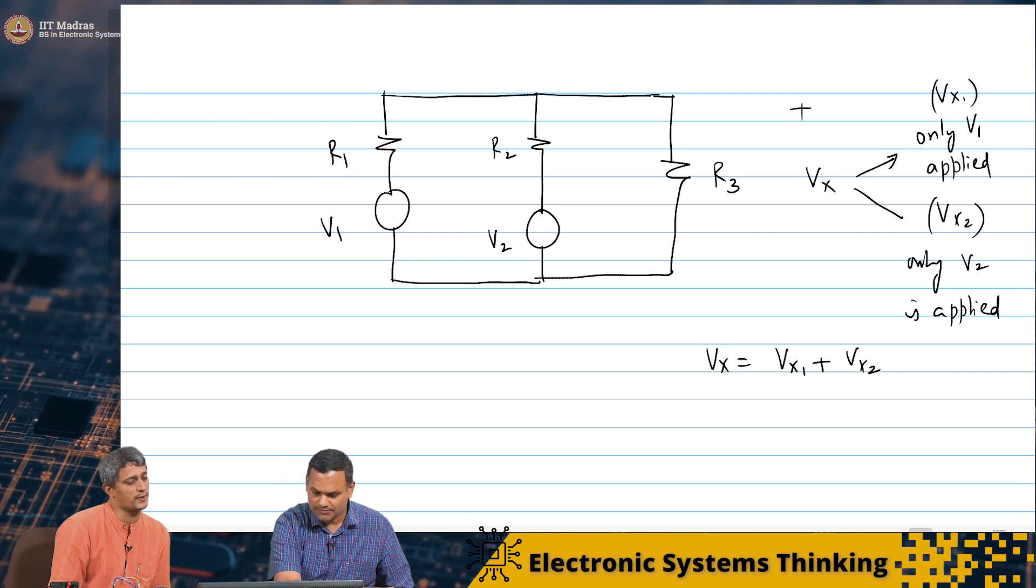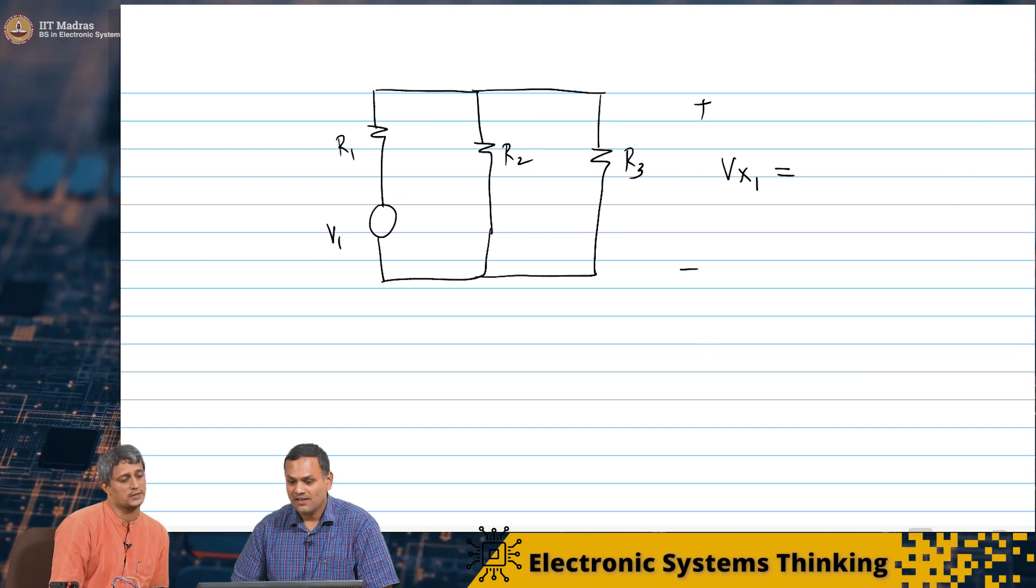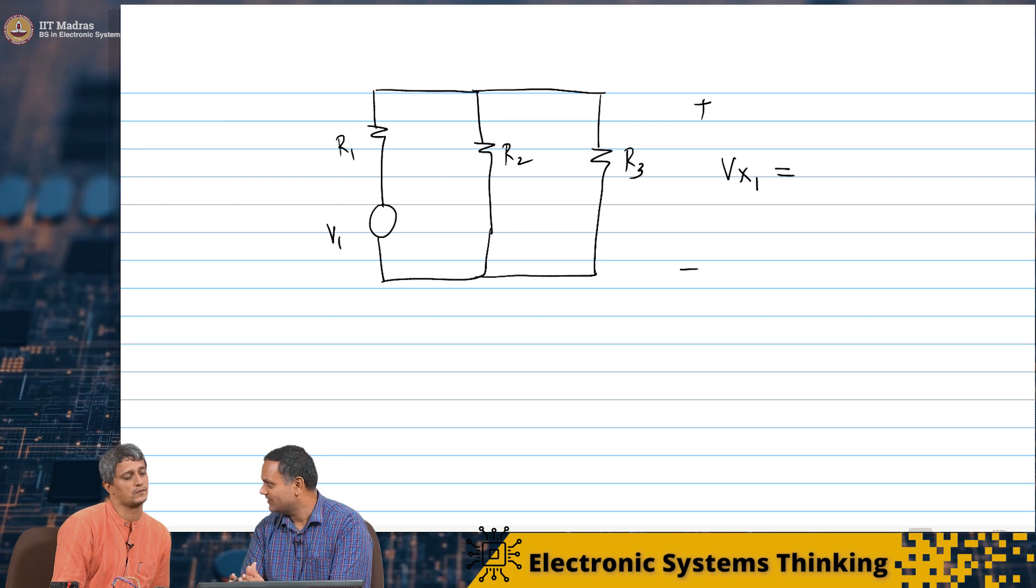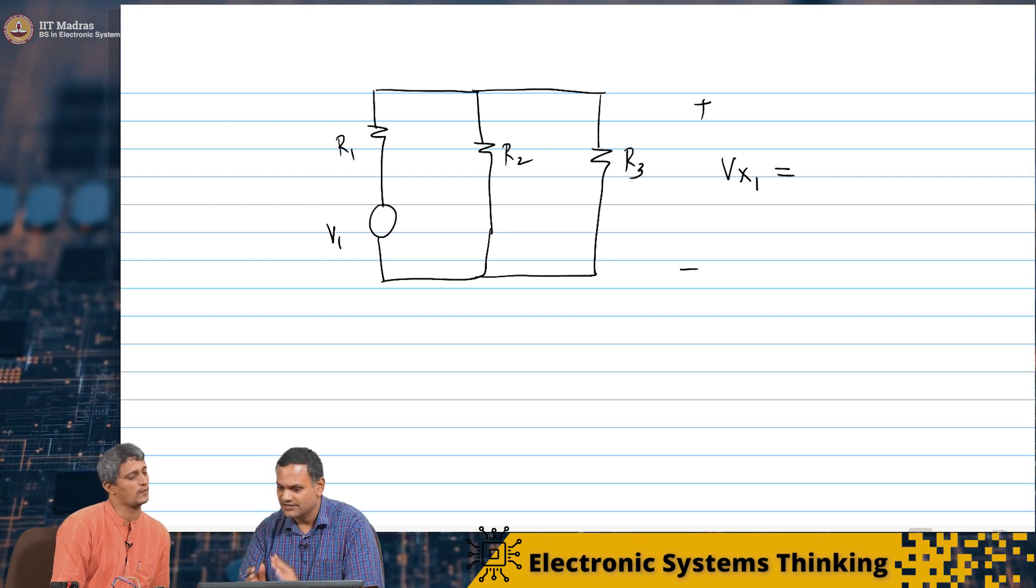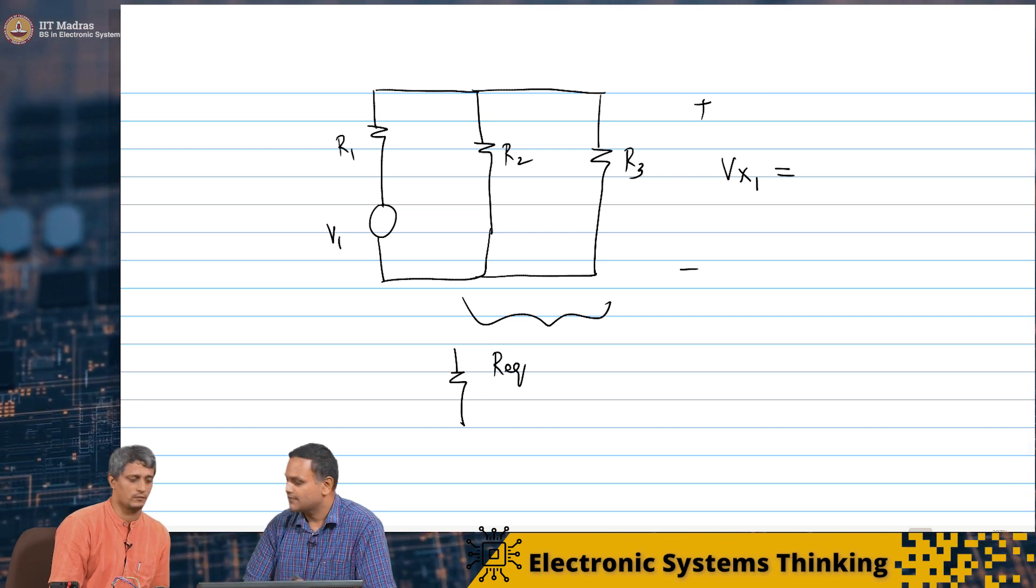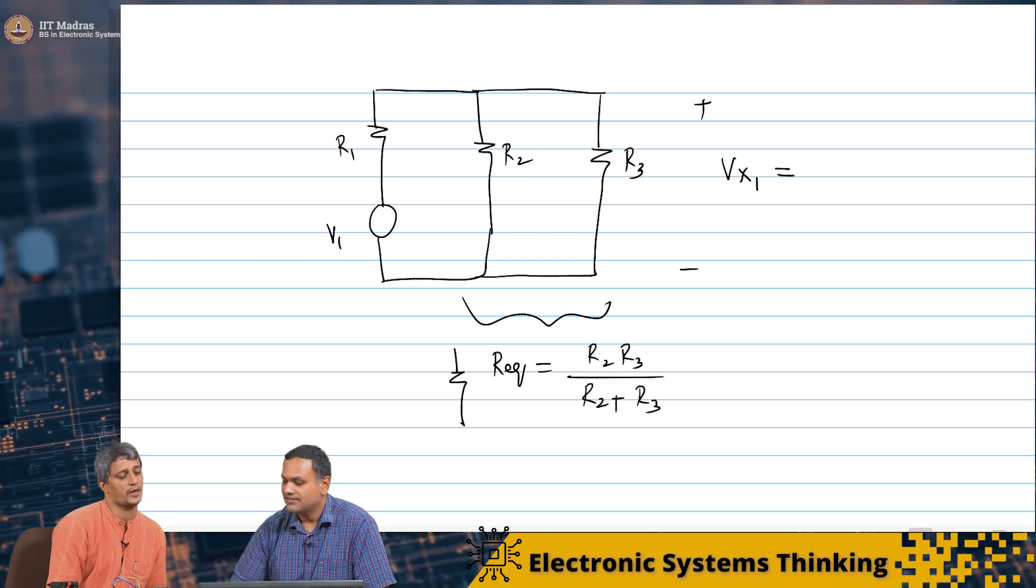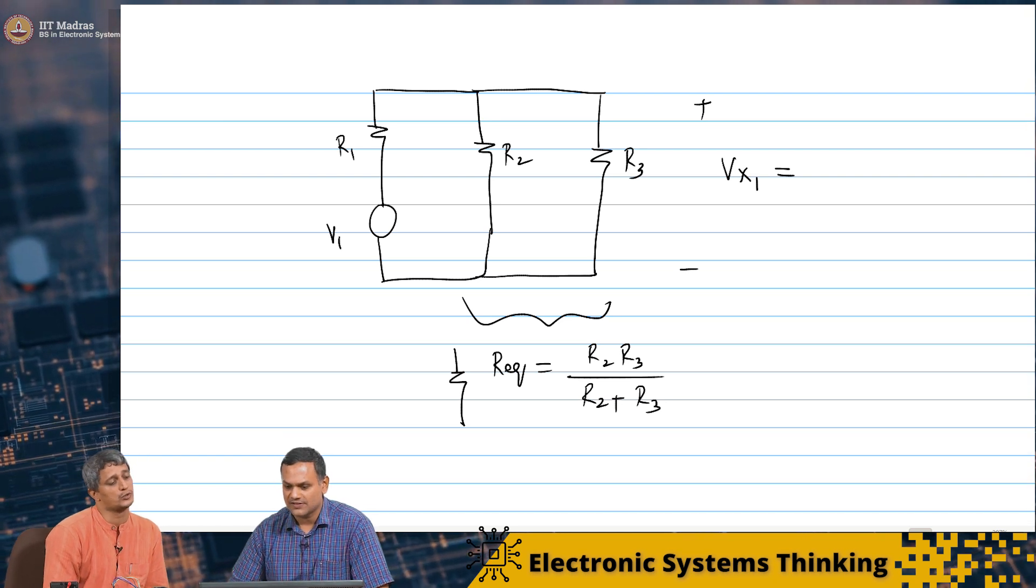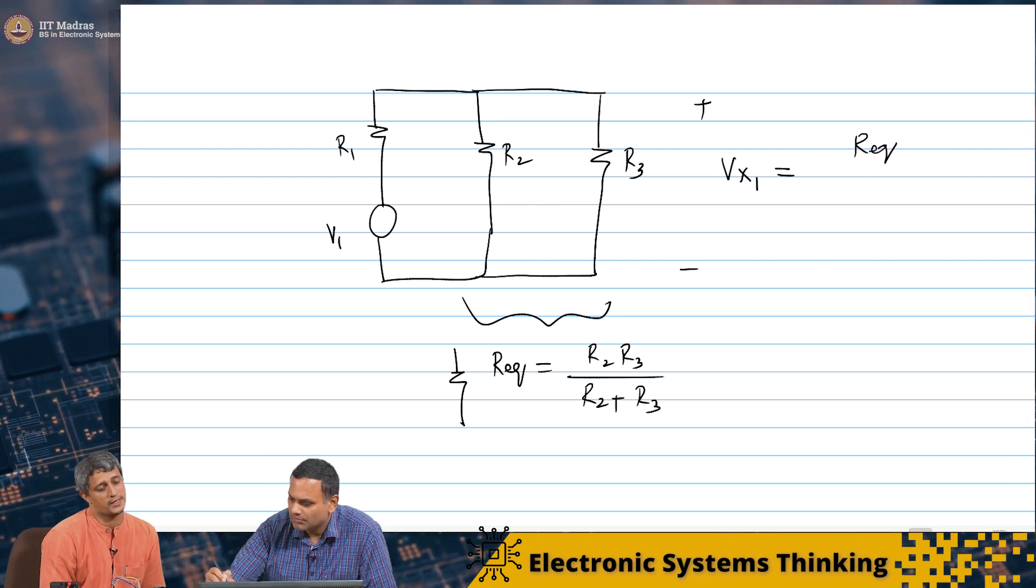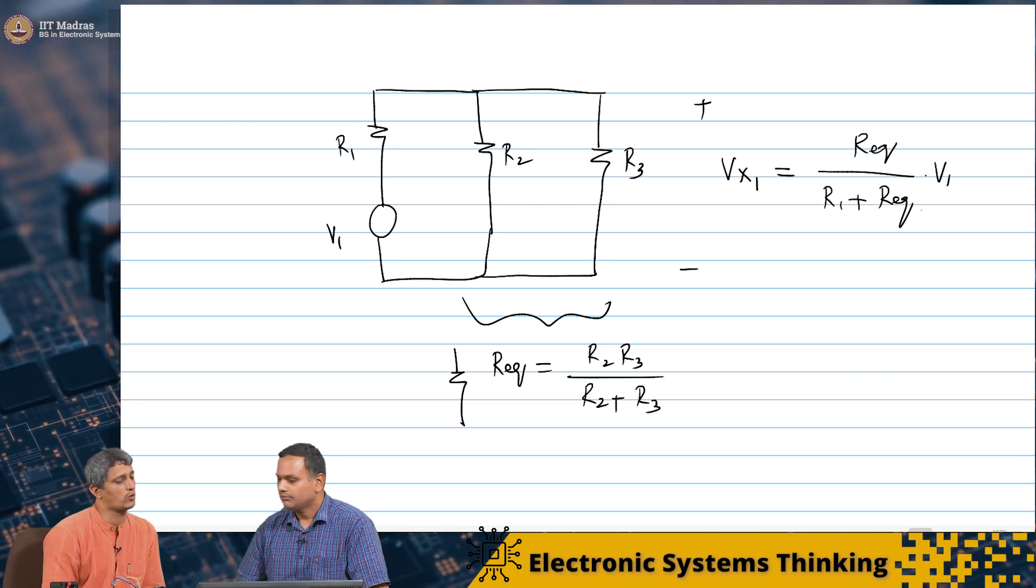Absolutely. So we will use that same principle. We will just write down that. So this Vx1, we will just write it. So you first generate a network with just R2 parallel R3. That is the equivalent resistance. So I will call this R equivalent, which is R2 times R3 by R2 plus R3. That is the parallel combination of two resistors. And then the voltage Vx1 is nothing but R equivalent by R1 plus R equivalent times V1. Absolutely.